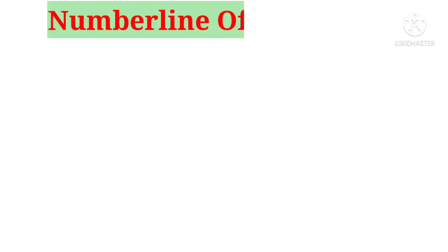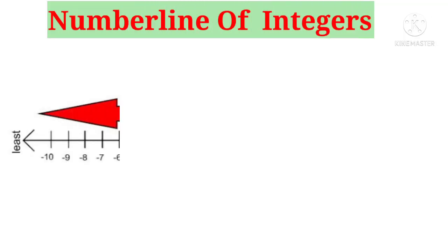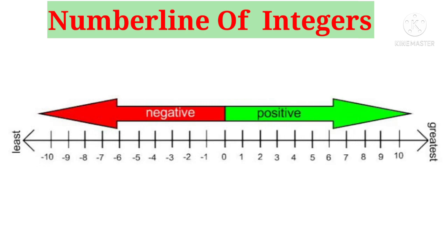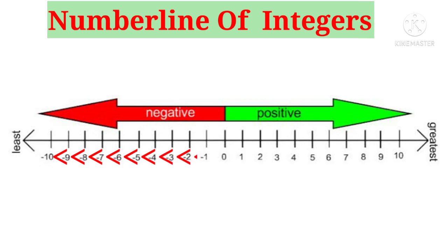Let us observe the number line of integers. Observe that in the center there is a number 0, the right side of 0 are positive numbers, and the left side of 0 are negative numbers. All numbers are arranged from left to right in increasing order — from small to big.